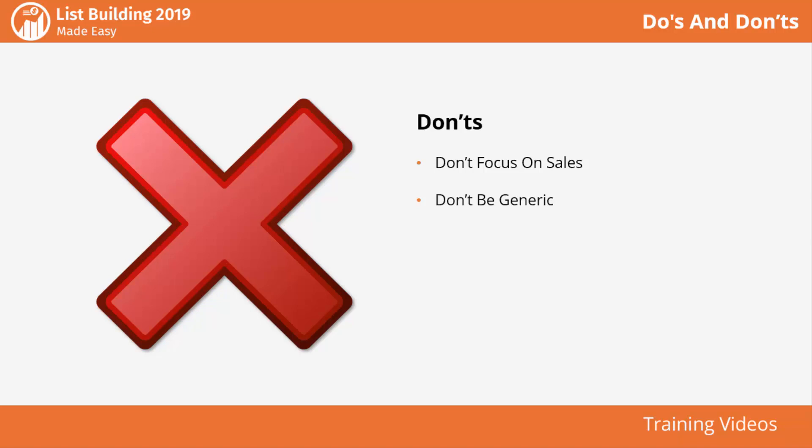Don't be generic: avoid using generic language to ask people to join your mailing lists. Instead, be specific about what people will get by giving you their email addresses, be it exclusive content, access, or periodic discounts. Don't demand immediacy: avoid asking leads to sign up right away without giving them a reason. Use urgency and scarcity along with an incentive to push leads to sign up instinctively.